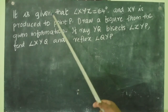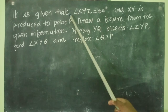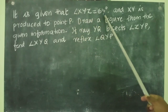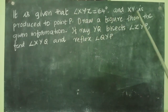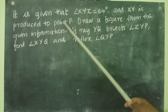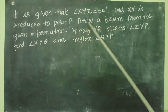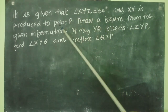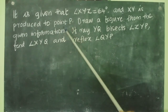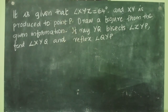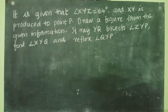So the question is: it is given that angle XYZ equals 64 degrees and XY is produced to point P. We need to draw the figure from the given information. The figure is not given in the question — we have to draw it.